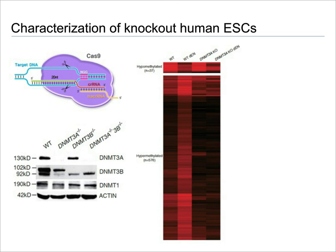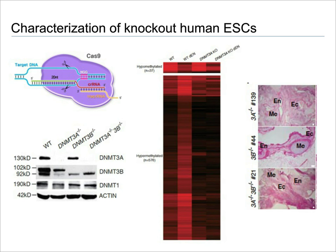In order to study the phenotype further, we used the teratoma assay. As you can see from these sections, all knockouts — the single or the double knockouts — can still differentiate into all three embryonic germ layers.